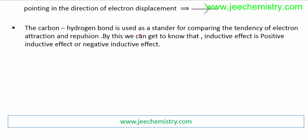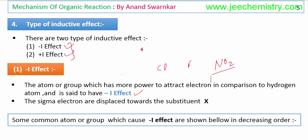The carbon-hydrogen bond is used as a standard for comparing the tendency of electron attraction and repulsion. By this we can determine which group is showing positive inductive effect and which group is showing negative inductive effect. Chlorine and fluorine have more power to attract electrons than hydrogen, so chlorine is stated as a negative inductive effect group.